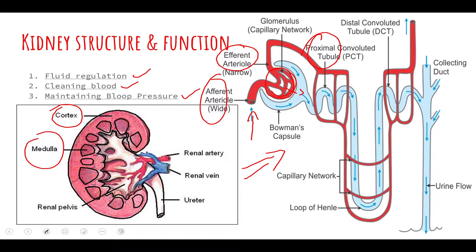From there, it goes down through the loop of Henle and all the way out through the distal convoluted tubule, where most of the kidney's blood pressure management works. This is a general function of the kidney. In this video, I'm more going to be talking about fluid regulation and cleaning of blood, because that's what the CRRT machine does.